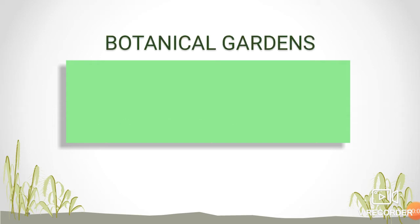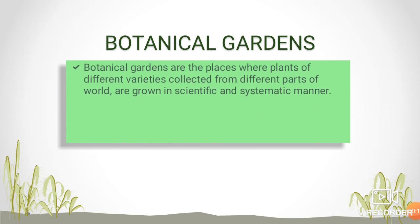Hello students, let's see the second taxonomic aid: botanical gardens. In this lecture, we study what botanical gardens are and what is the importance of botanical gardens. Botanical gardens are places where plants of different varieties, collected from different parts of the world, are grown in a scientific and systematic manner.